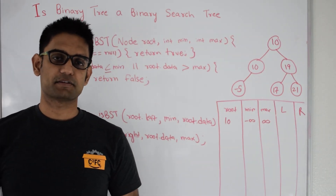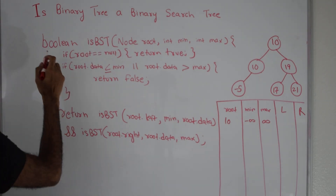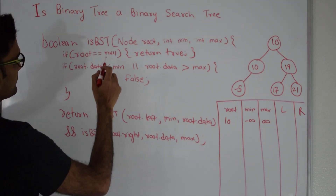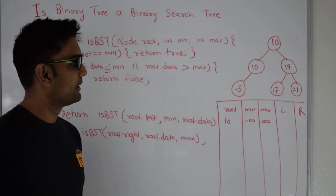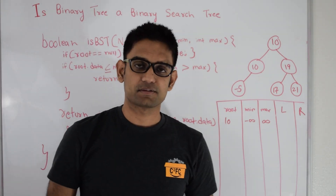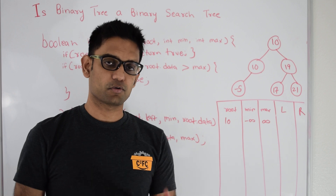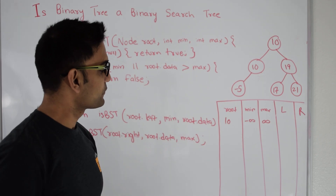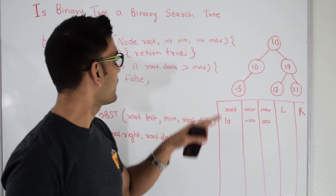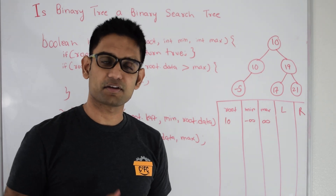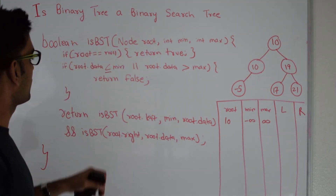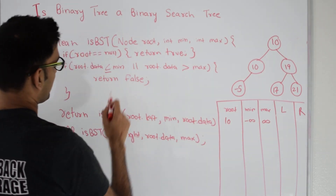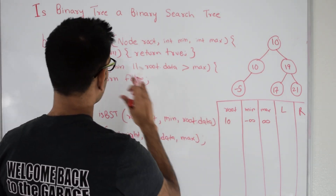This is the code for isBST. It's a recursive function. It returns true if the subtree rooted at this root is a BST, and false if it is not. I have also handled duplicates — we assume that if a number is less than or equal to root it goes on the left side, and if it is greater than root it goes on the right side. Initially root is 10, minimum is minus infinity, and max is infinity. Root is not null. Root data is greater than minus infinity and less than infinity, so it doesn't go into the if condition.